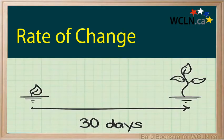A rate of change is a number that describes how one quantity changes in relationship to another quantity. For example,